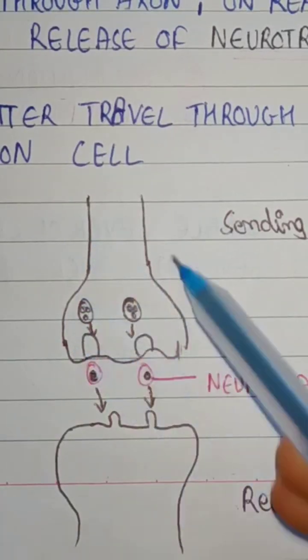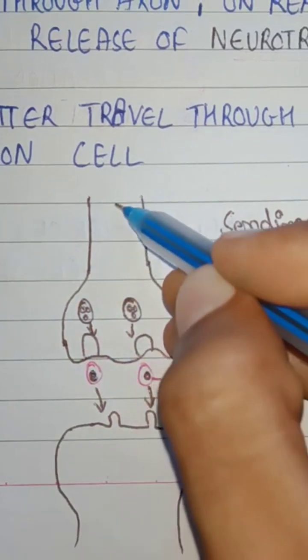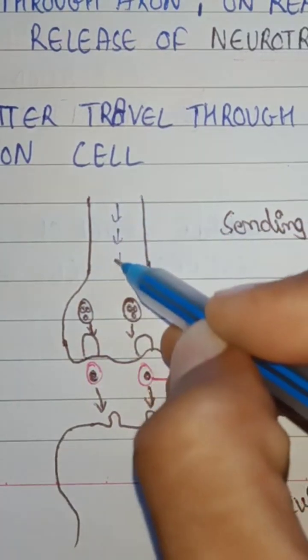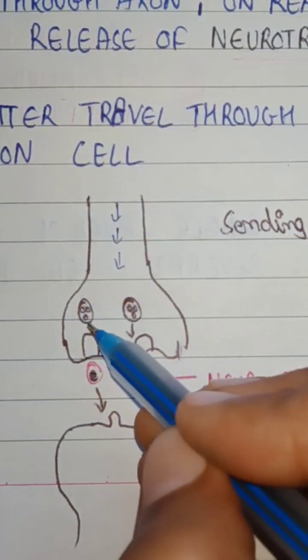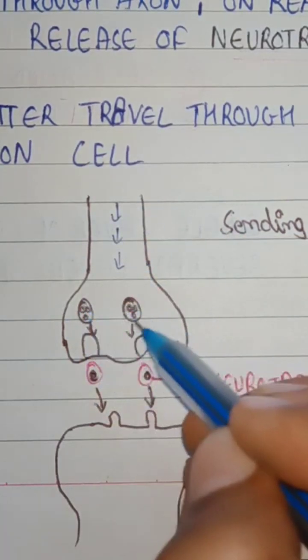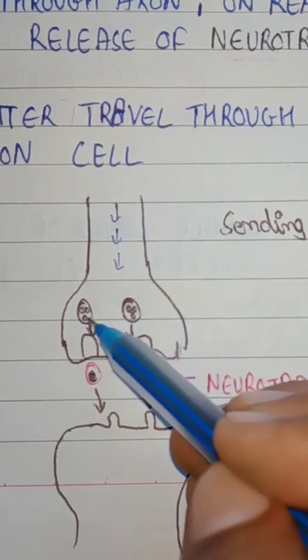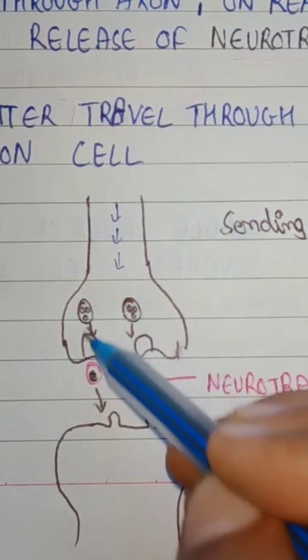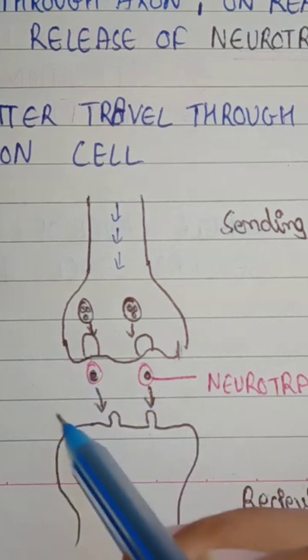So these are two neurons. The information will come from this neuron step by step. On the end of the neuron, there are neurotransmitters. When information comes down to the neuron, at the end of the neuron, these neurotransmitters are released in this space.